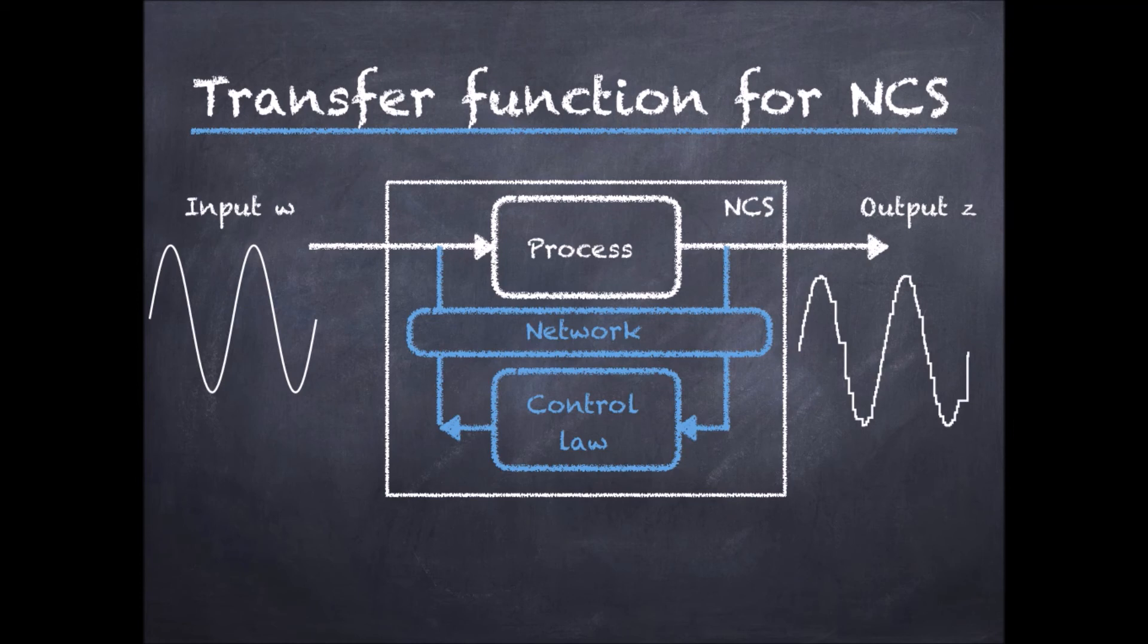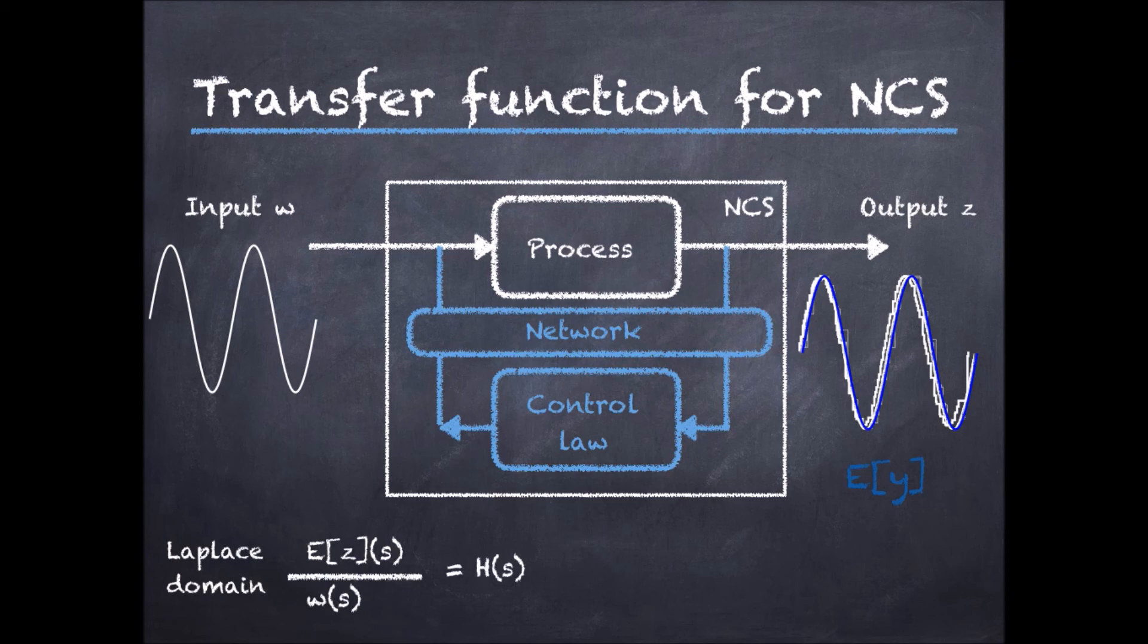In fact, we can have several possible outputs. However, if we take the expected value, we will only have one function. Then we can define a transfer function from the input to the expected output, which is typically defined in terms of Laplace transforms. It turns out that we can often do the same for the standard deviation of the output. That is, we can define the transfer function from a deterministic input to the standard deviation of an output of a stochastic networked control system, at least for certain models.